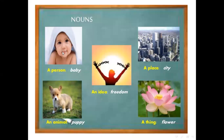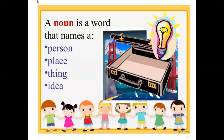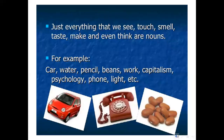Again, here you see: a person — baby; idea — freedom; place — city; thing — flower; animal — puppy. A noun is a word that names a person, place, thing, or an idea. Everything that we see, touch, smell, taste, make, and even think are nouns. Keep this in mind.